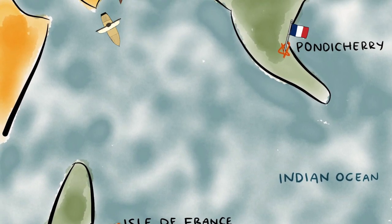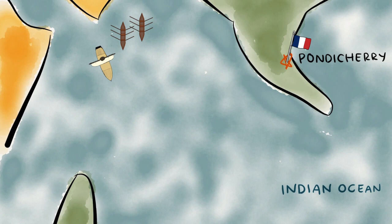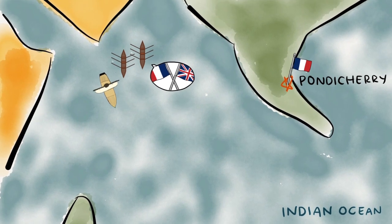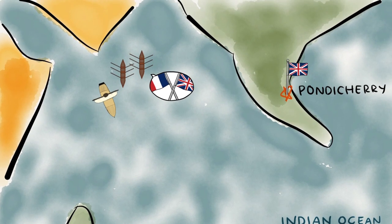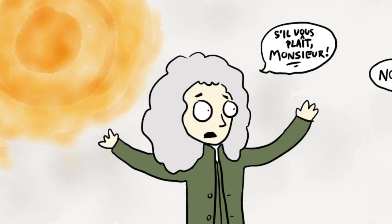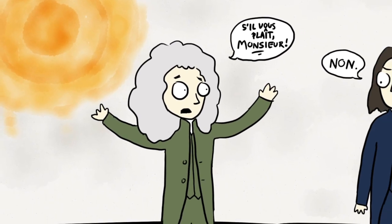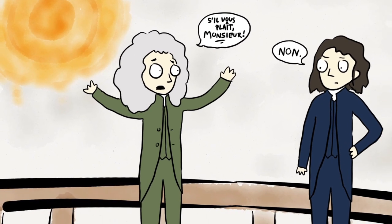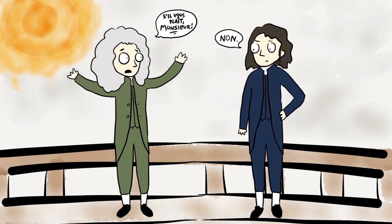With only a month left before the transit, the crew of the Sylphide learned that war had broken out between England and France, and Pondicherry was now under British control. To Le Gentil's dismay, the crew opted to return to the Isle de France. The transit occurred while he was at sea.